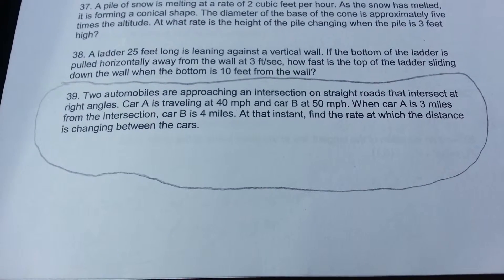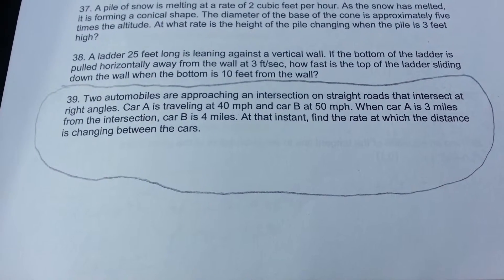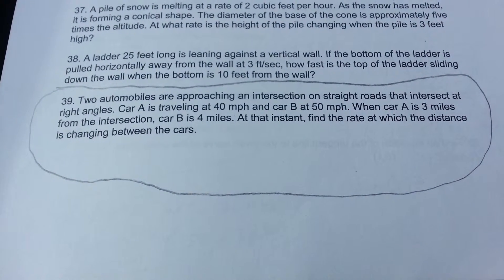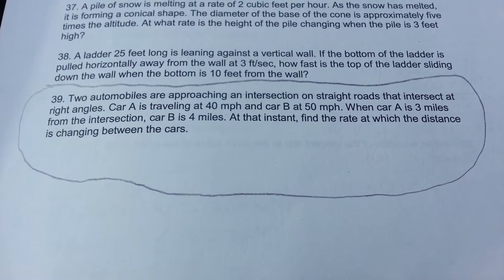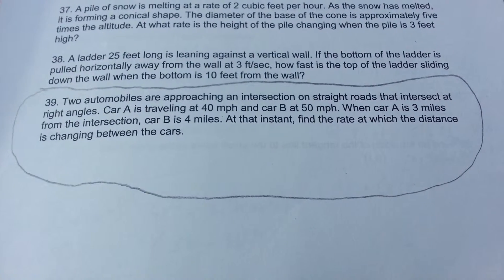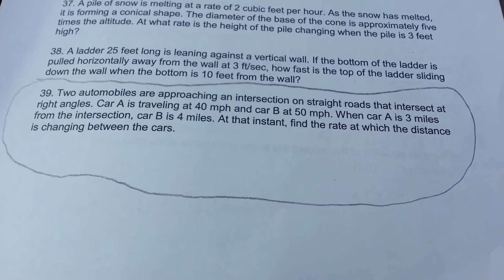The problem is two automobiles are approaching an intersection on straight roads that intersect at right angles. Car A is traveling at 40 miles an hour and car B is traveling at 50 miles an hour. When car A is 3 miles from the intersection, car B is 4 miles from the intersection. At that instance, find the rate at which distance is changed between the cars.